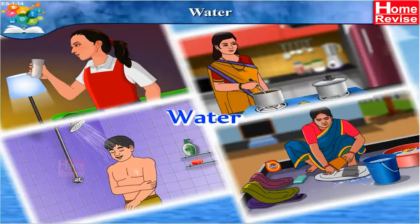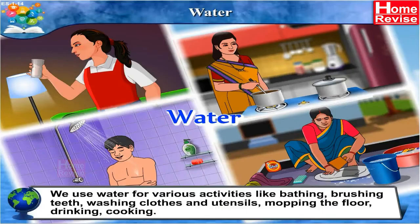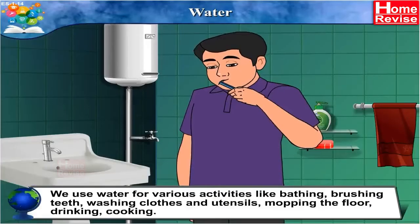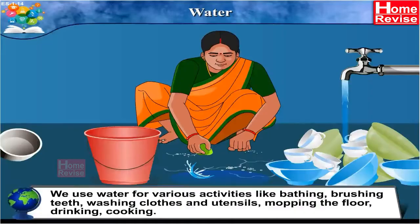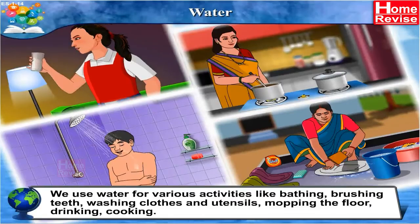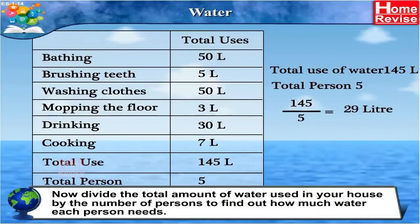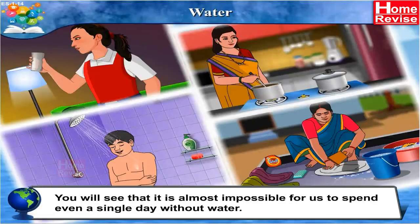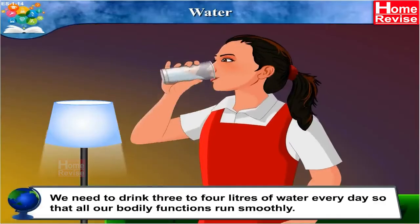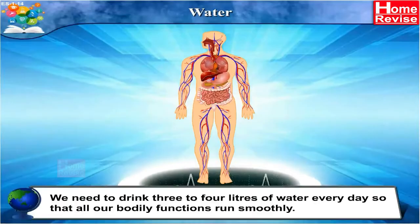Water. Students, observe how much water is used and for what purposes in your house for a whole day. We use water for various activities like bathing, brushing teeth, washing clothes and utensils, mopping the floor, drinking and cooking. Divide the total amount of water used by the number of persons to find out how much water each person needs. It is almost impossible to spend even a single day without water. We need to drink 3 to 4 litres of water every day so that all our bodily functions run smoothly.